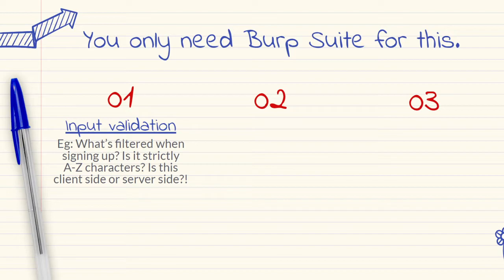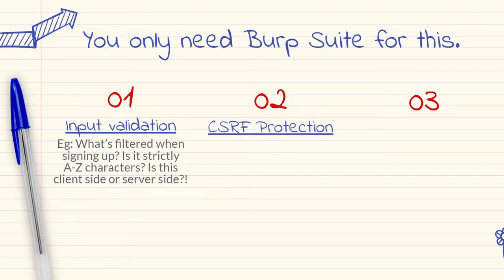Think a bit deeper than that — if you can sign up with an HTML payload in your first name, even though it's not vulnerable when it's reflected, how is that developer approaching security? They're actually allowing someone to sign up with symbols in their name. That leads you to thinking about what happens later on — if they leave the company or new code comes out, they might not realize the name field isn't being filtered on sign-up, and you can have problems further down the line.